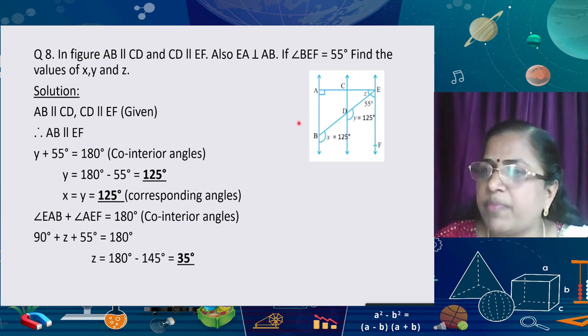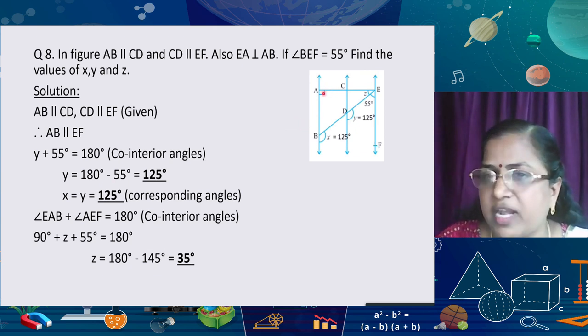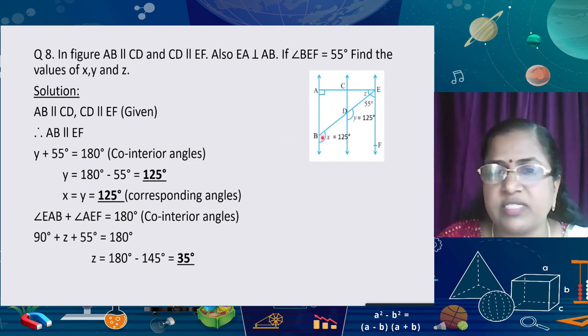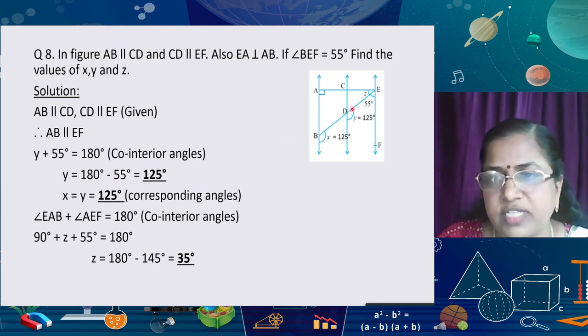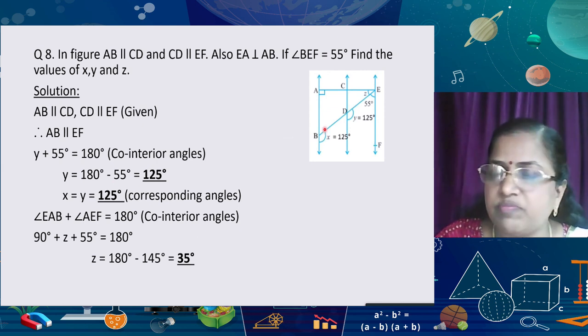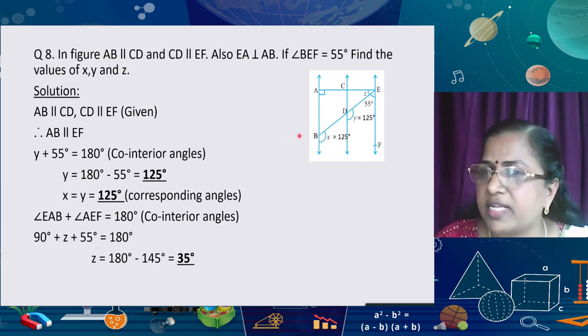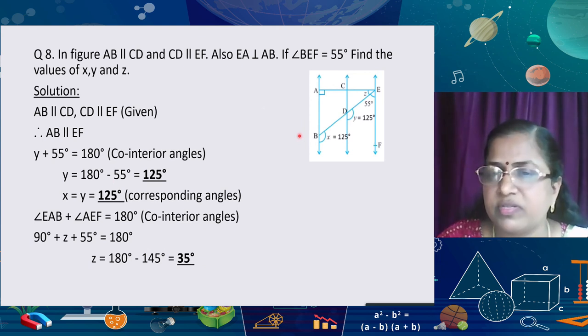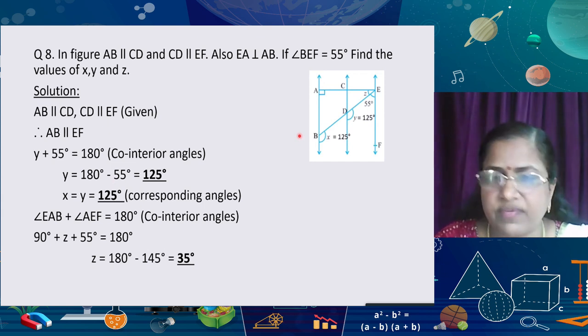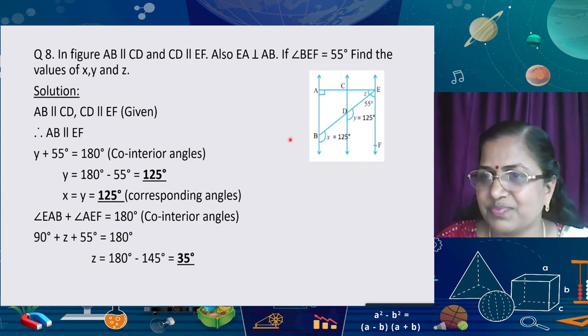In conclusion, two lines which do not intersect are called parallel lines, and the distance between them is always equal. A transversal is a line that intersects two or more lines at distinct points. The key angle relationships made by a transversal with parallel lines are: corresponding angles (equal), alternate interior angles (equal), and co-interior angles (sum = 180°). Revise this portion, and if you have any doubts, you can ask. Thank you so much ma'am — you explained each and every step about lines and angles very clearly.